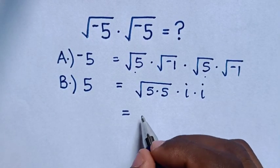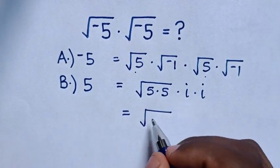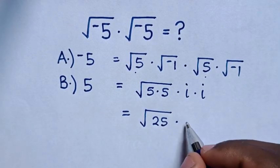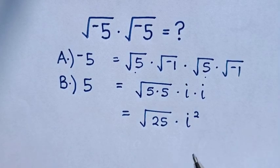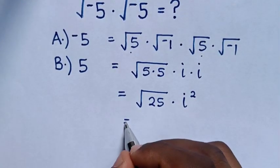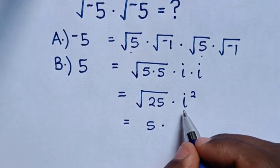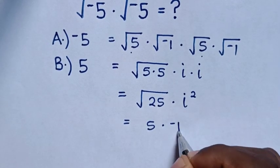So it will be equal to square root of 5 times 5 is 25 times i times i is i square. Then, it will be equal to square root of 25 is 5 times i square is negative 1.